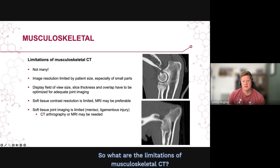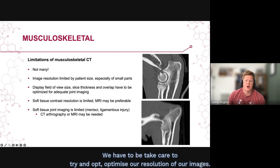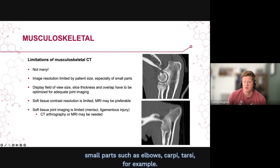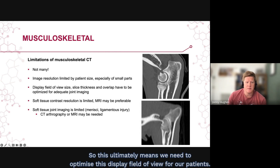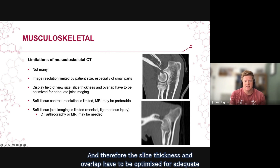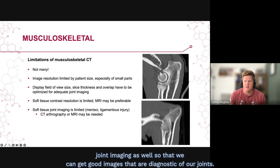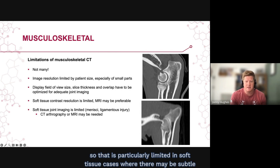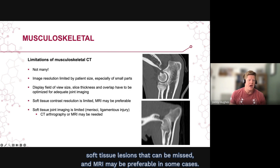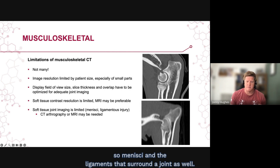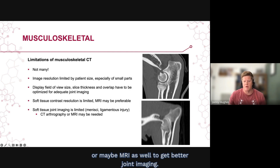What are the limitations of musculoskeletal CT? There are not many, but we must optimise image resolution. This can be limited by patient size, especially when considering small parts such as elbows, carpi, and tarsi. We need to optimise the display field of view, and slice thickness and overlap must be adjusted for adequate joint imaging. As with every body region, soft tissue contrast resolution is limited, meaning subtle soft tissue lesions can be missed. MRI may be preferable in some cases. Imaging of the spine, intra-articular soft tissues such as menisci and ligaments is limited, and CT arthrography or MRI may need to be added for better joint assessment.